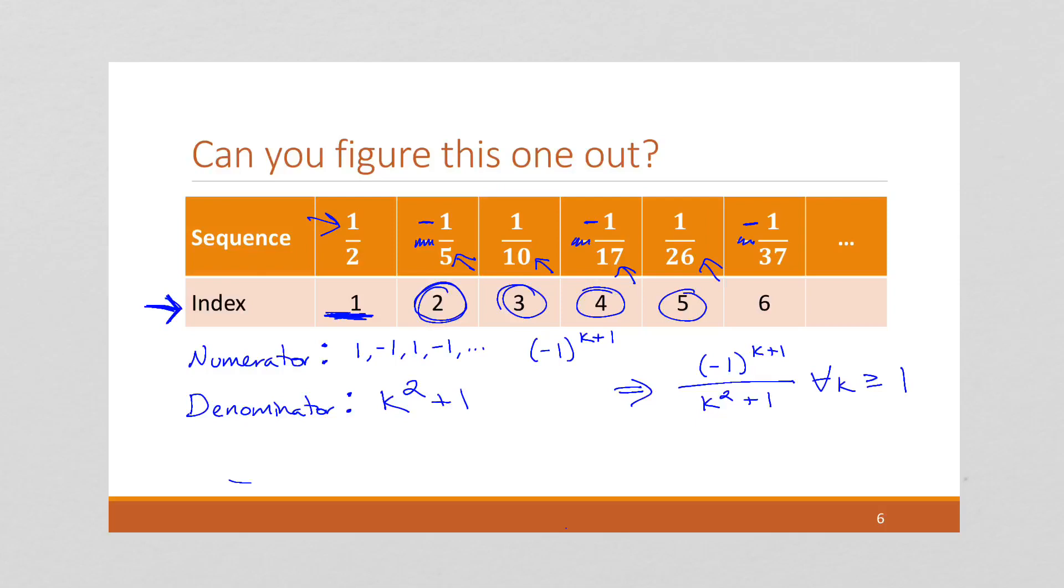Now, notice along the way, I dropped saying that this was for all k in the integers, such that k was greater than or equal to 1. That is very typical when dealing with sequences, because sequences always have the input, the index will always be over the integers. That's sort of the definition of a sequence is we are indexed by sequential integers. So it's very common to just sort of ignore that and have that be implicit instead of explicit.